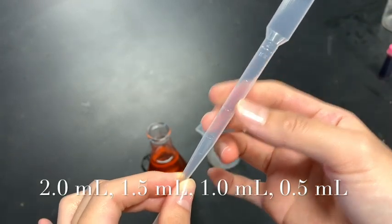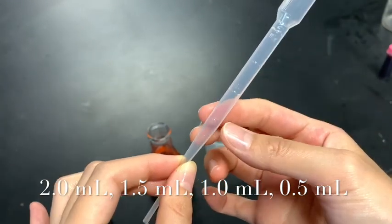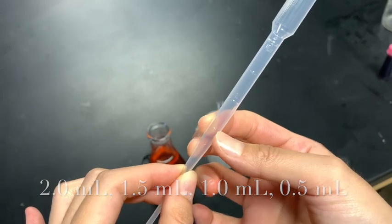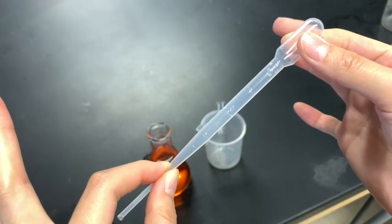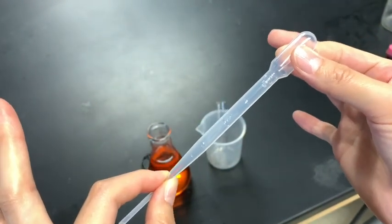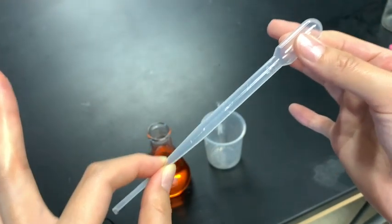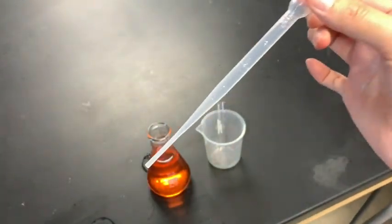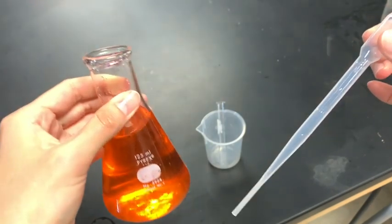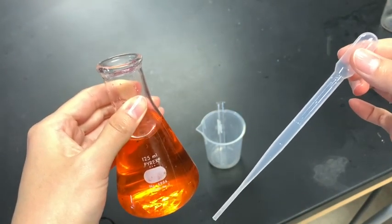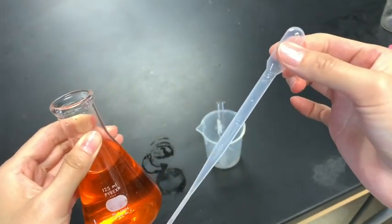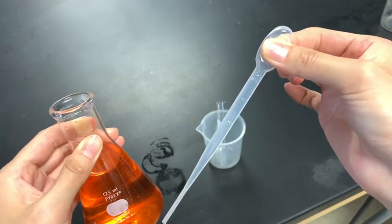In this video I'm going to demonstrate how to transfer 1 milliliter of solution into a test tube. Here is some water - I added some food coloring so you can easily see what I'm doing. First, you have to apply some pressure on the bulb.